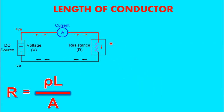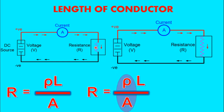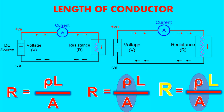Let's talk about what happens to the total resistance of the circuit if we increase the length of the conductor. I have increased the length of the conductor while keeping the other two factors — resistivity and area — constant. It is clear that if we increase the length of the conductor, the resistance of the overall circuit will increase and the current in the circuit will decrease by the same proportion.